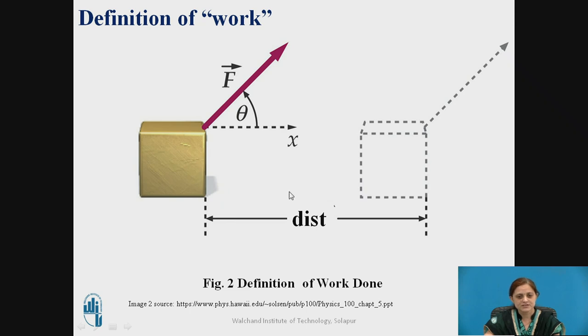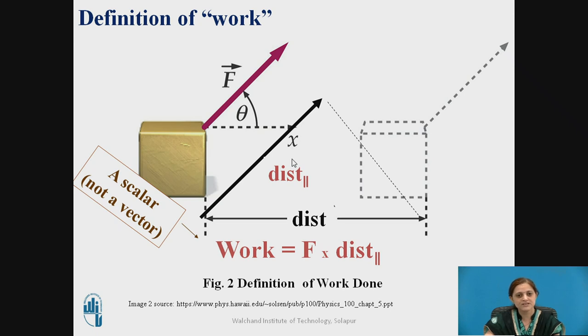In this figure, it shows the definition of the work. So if you want to move this block from initial position to the final position, denoted with the distance dist, the direction is given by this angle theta. Thus you can say that the work is nothing but the force into displacement. So here the force is in vector form and the displacement is also in vector form. But note that work is a scalar quantity, not a vector quantity. Although the force and displacement both are in vector forms, but the work is in scalar quantity because any dot product of the two vectors is a scalar quantity.